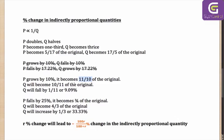That means if P is becoming 11/10, Q will become 10/11 of the original — which means Q will fall by 1/11, or 9.09%.